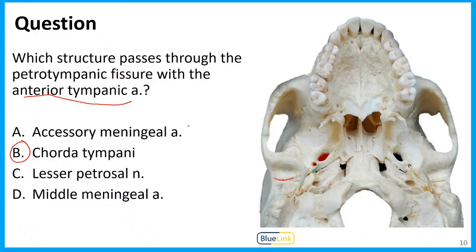As for the other answer choices: the accessory meningeal artery courses through the foramen ovale, the lesser petrosal nerve also courses through the foramen ovale, and the middle meningeal artery courses through the foramen spinosum.